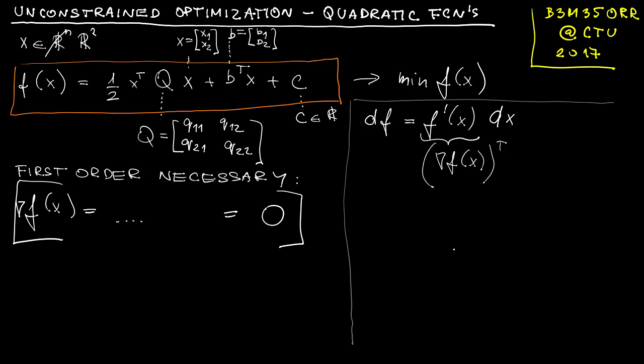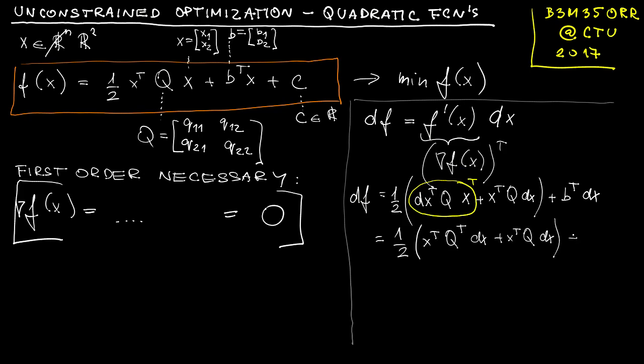We will follow the agreement that a gradient is just the transposition of the derivative. When finding the differential of a function, we proceed in the same way as when finding derivatives. Here we had to find the differential of a product, so it's composed of two parts. On the second row we can use the fact that the individual terms here are scalar.